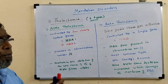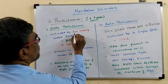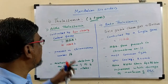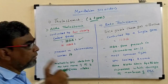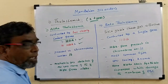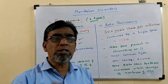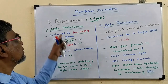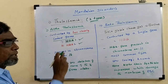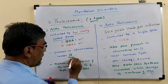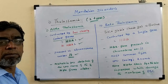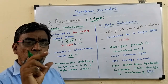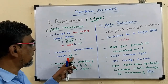In Alpha Thalassemia, the abnormalities of the alpha chain of hemoglobin are controlled by two closely linked genes: one gene is called HbA1 and another gene is called HbA2. These two genes control the normal structure of RBC or hemoglobin. When this gene causes some abnormalities, Alpha Thalassemia is formed. These two genes are present in chromosome number 16.